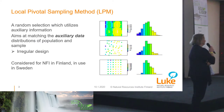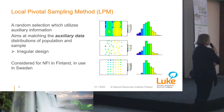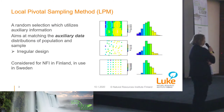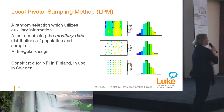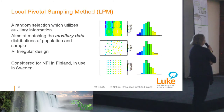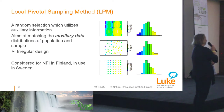About two and a half years ago, we started to test a new sampling method in the context of NFI. Its name is the Local Pivotal Method, LPM. The idea in this sampling method is that we utilize auxiliary data. When the sample is chosen with the LPM, the idea is that the distribution of auxiliary data in the sample would be as close as possible to the distribution at the population level.